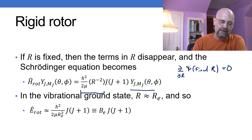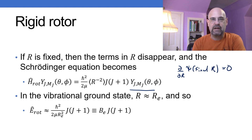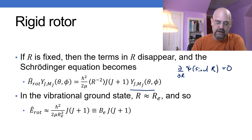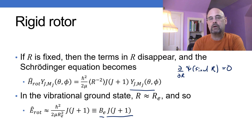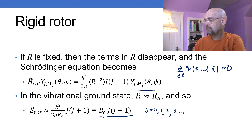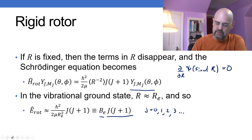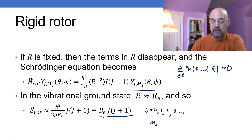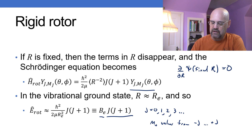We can simplify this greatly. In the vibrational ground state, r is approximately equal to r_e, the bottom of the vibrational potential well, so the rotational energy just becomes equal to B_e times J(J+1), where J goes from 0, 1, 2, 3, and so on. m_j, although not included in the energy, is included in the degeneracy: m_j has values from minus J to plus J in intervals of one.